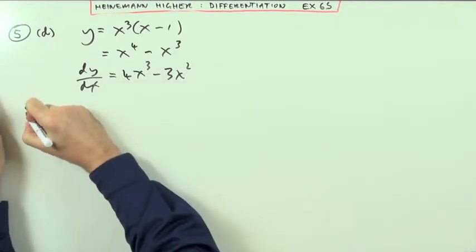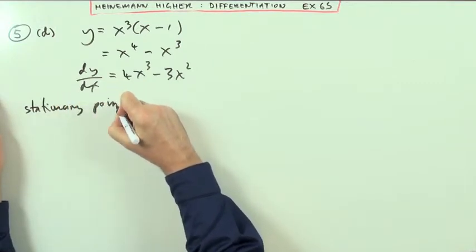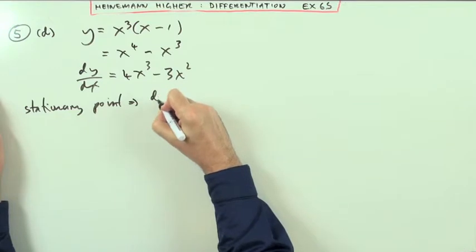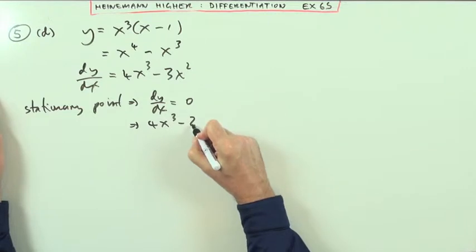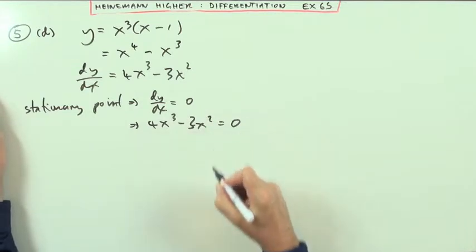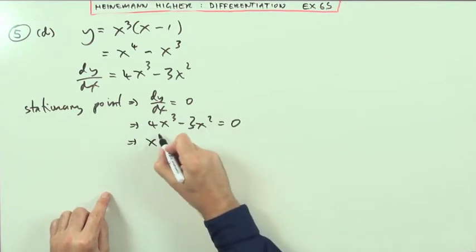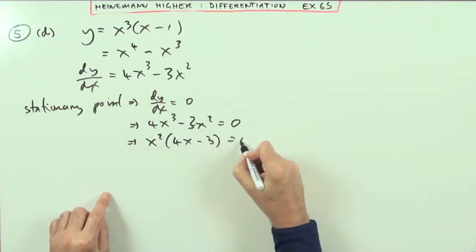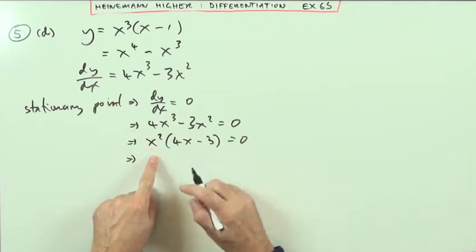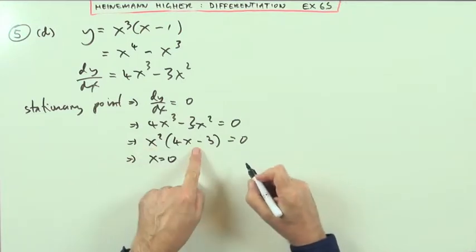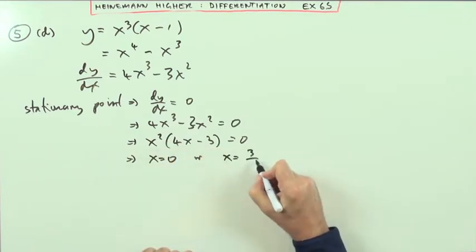And then stationary points, as before. You'll get a stationary point if the derivative ever equals 0. If this expression here, what about messy, ever equals 0. This factorizes. I can take out x squared and be left with 4x minus 3. Since it's factorized, if that was responsible for the 0, that means x is 0. If that's responsible for the 0, then x is going to be 3 over 4, 3 quarters.